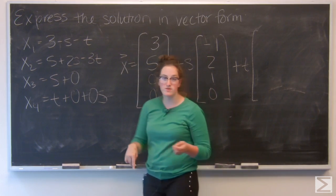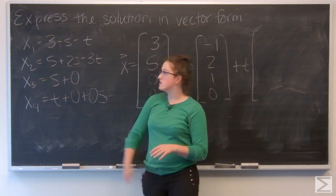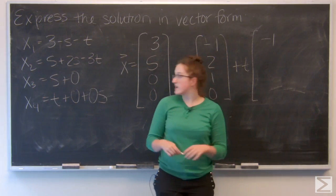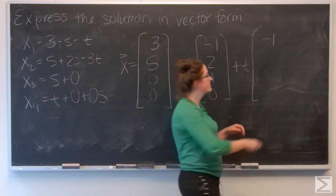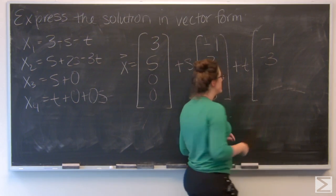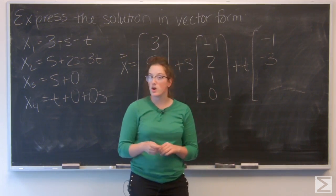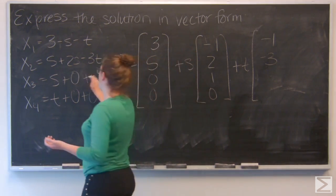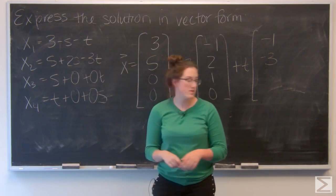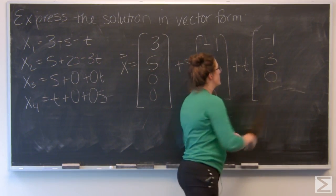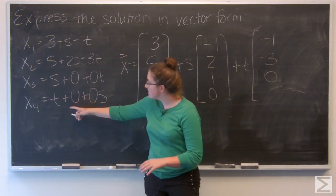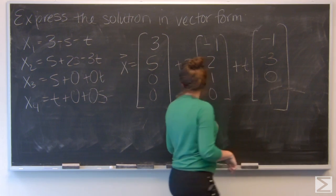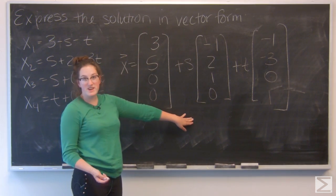Now, my third vector is going to be coefficients of t. So for x1, that gives me negative 1. x2, negative 3. And then x3 does not have a product of t in it. It only has an s term. So I can think about that like plus 0t. So that gives me a 0 for the third component. And then x4 has t in it, but just 1. So that gives me 1. And this is my solution expressed in vector form.